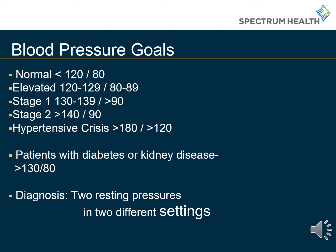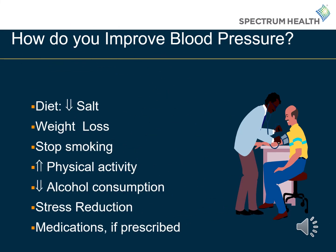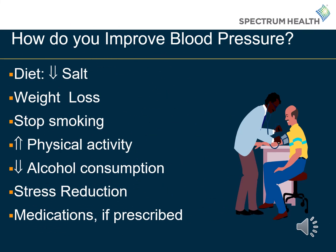To assess your risk as it relates to blood pressure, use two resting blood pressures from two different settings. Reducing salt consumption can help tremendously with improvements in blood pressure. Weight loss, regular physical activity, and tobacco cessation can also help to reduce blood pressure. A decrease in alcohol consumption will help you reach your blood pressure goals, as well as stress reduction and medications if prescribed.